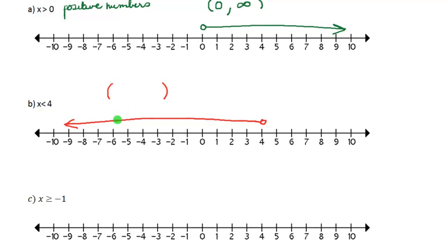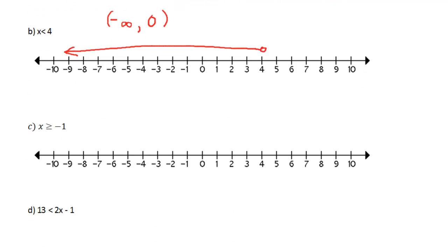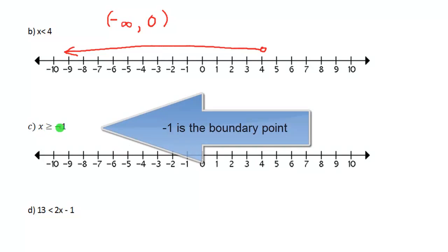When rewriting this in interval notation, four is our greatest number so it goes on the right. And we use negative infinity to denote all the numbers that are negative and never end.